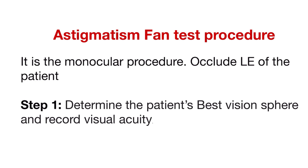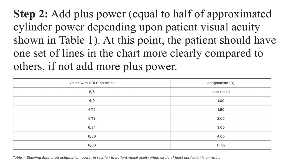Before we start the actual procedure of the astigmatic fan test, I want you to know about the optics behind the astigmatic chart — the link will be given in the description box. The astigmatic fan test is a monocular procedure, so you have to occlude the left eye of the patient. Step 1, similar to the clock dial astigmatic chart, is to determine the best vision sphere and record the visual acuity. Remember to do fogging for your hypermetropic patient after recording the visual acuity.